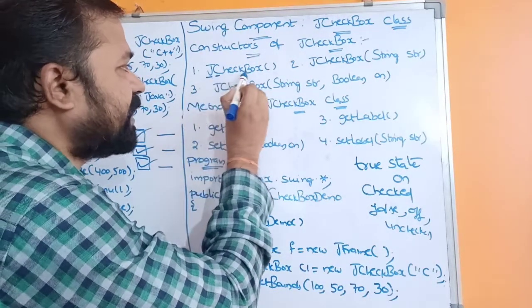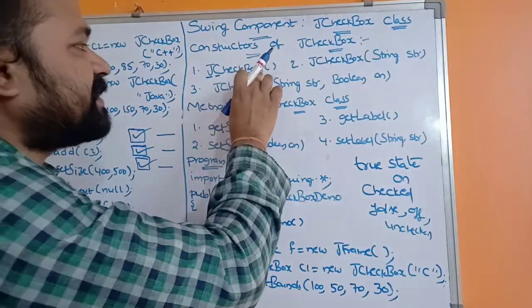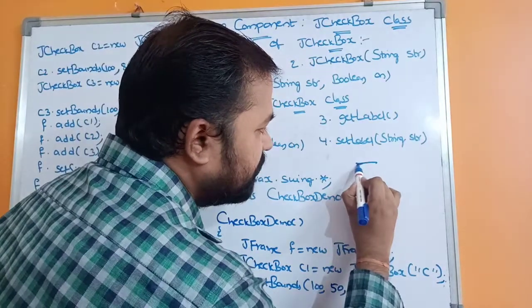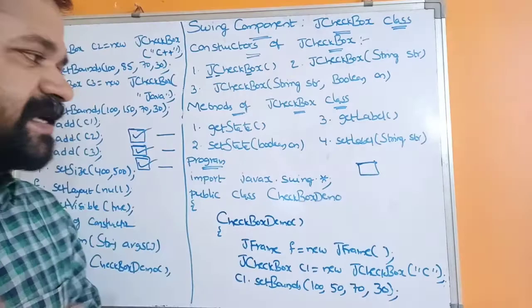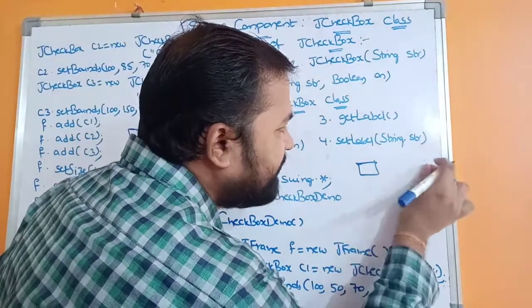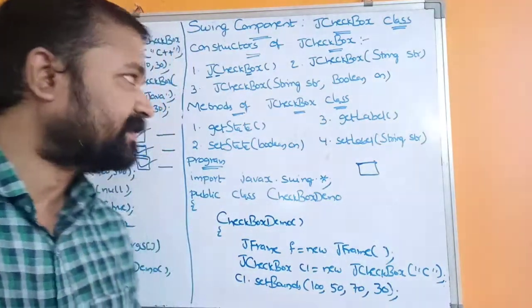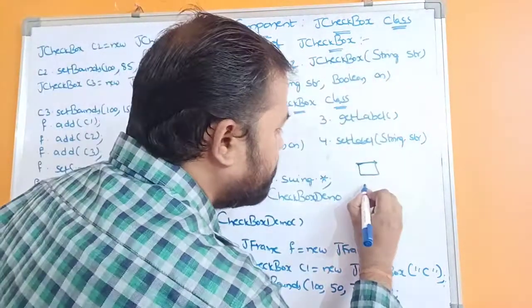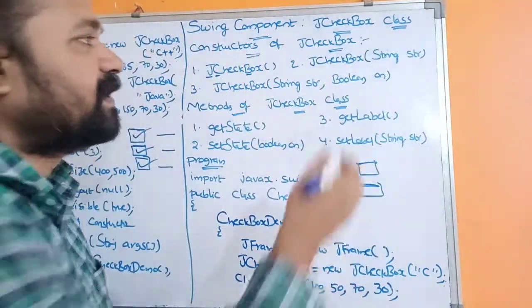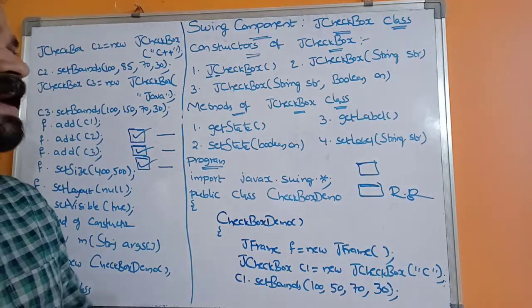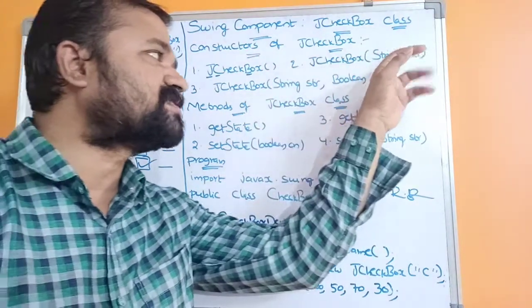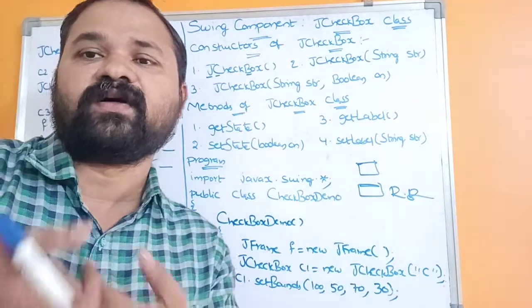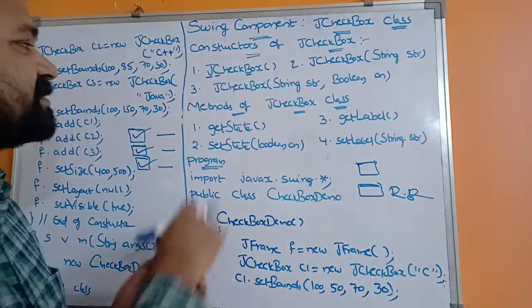The first constructor doesn't accept any parameters. If the constructor doesn't accept any parameter, it creates an empty checkbox — no tick mark symbol and no label. The second constructor is JCheckbox(String str), which creates a checkbox with the specified string as the label. For example, if the string is 'reading books', that becomes the label. The initial state is false — no tick mark is shown.